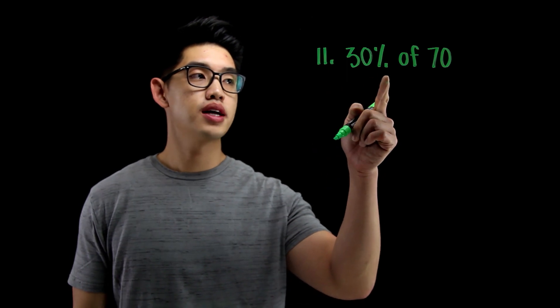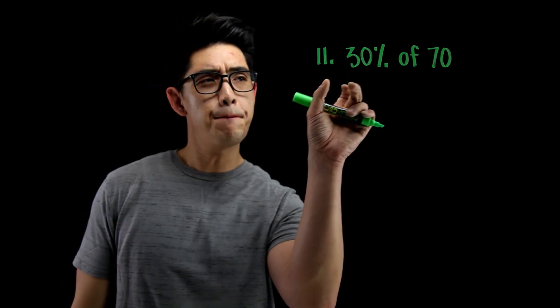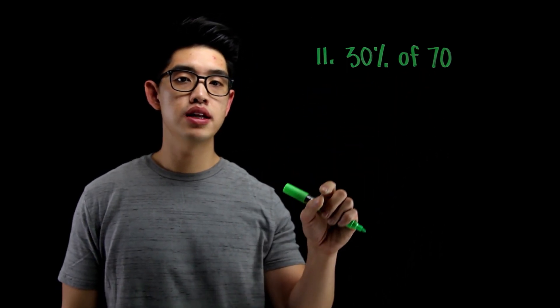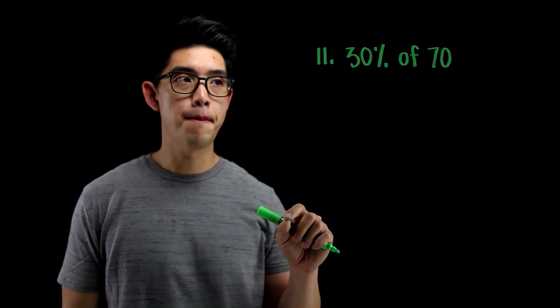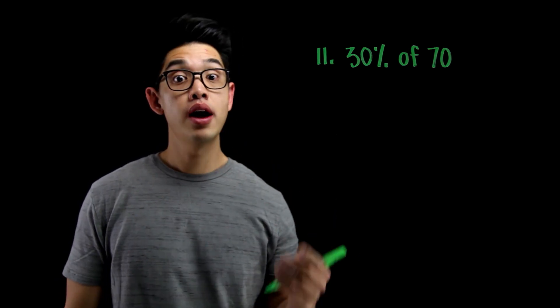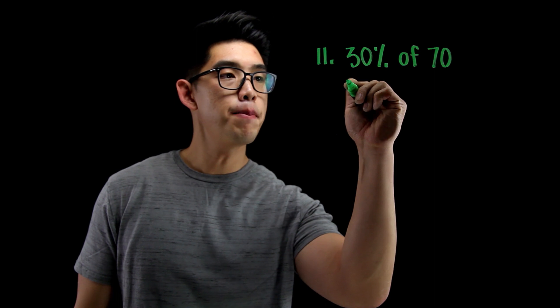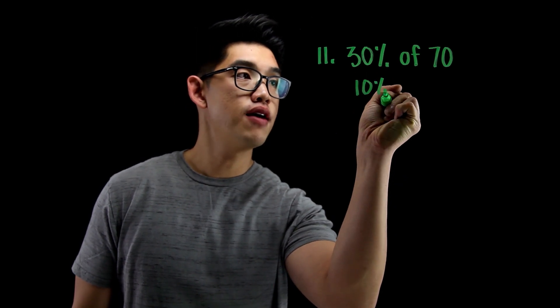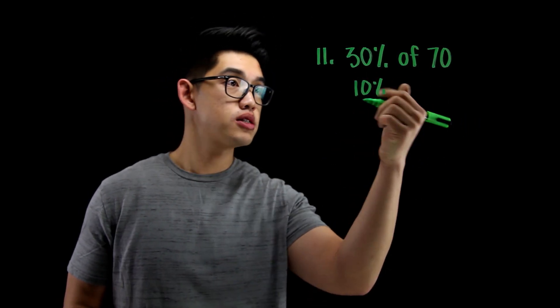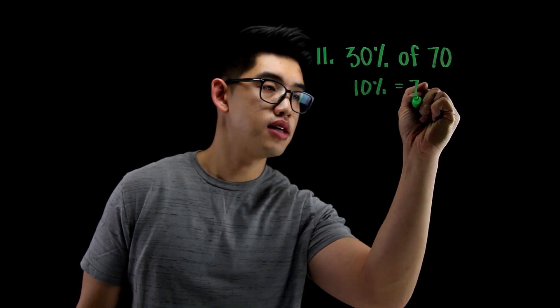For number 11, I want to find 30% of 70. Again, I'm trying to find a portion of 70. What is that number? I want to do the same thing. I know that 10% of 70, again finding 10% is really easy. 10% of 70 is just 7. You just move the decimal to the left. So 10% is 7.